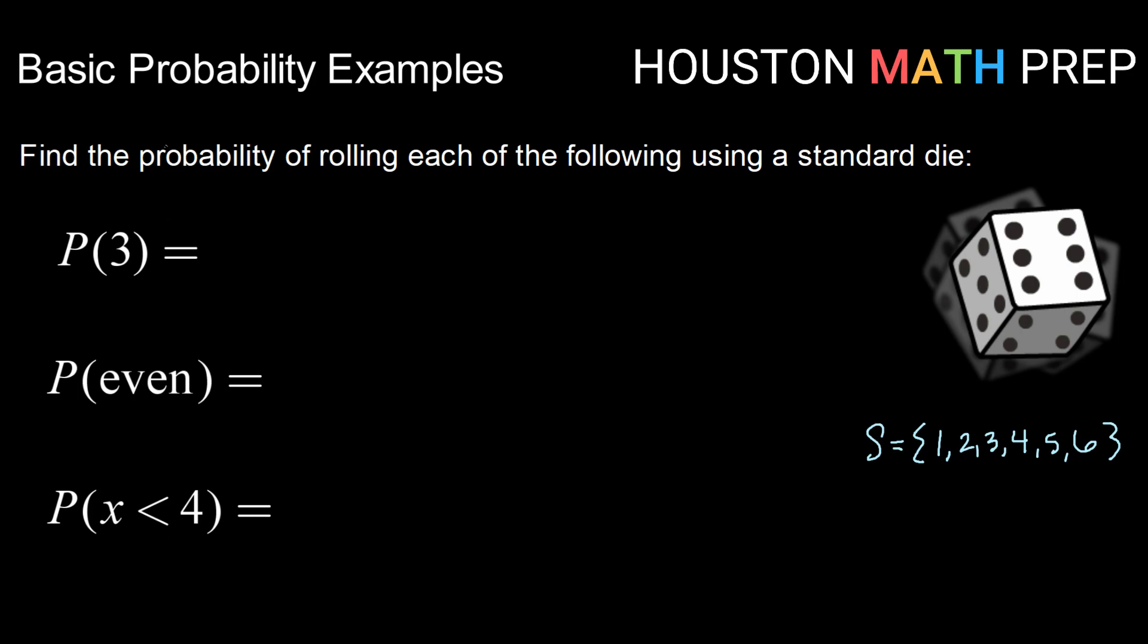So when we look at our probabilities here, what is the probability of rolling a three? When I look, three is one of my outcomes. And I have one, two, three, four, five, six possible outcomes. So the probability of rolling a three is one out of six.